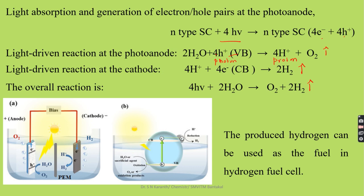This concludes how we carry out the photocatalytic method and photoelectrocatalytic method of water splitting for the production of hydrogen gas, which can be used as a fuel for the hydrogen fuel cell. That will be discussed in the next video. Thank you.